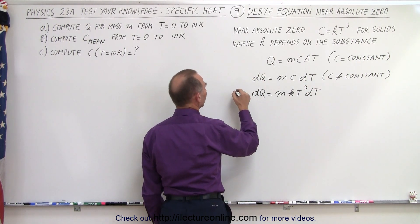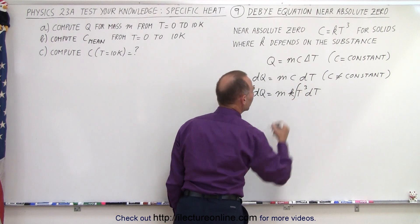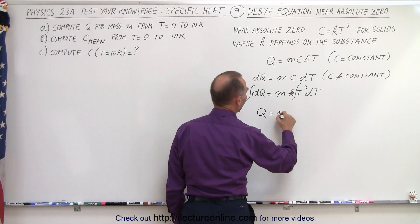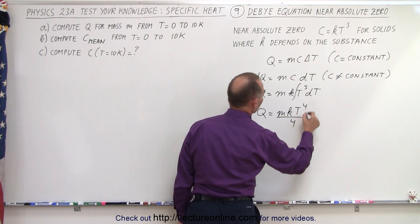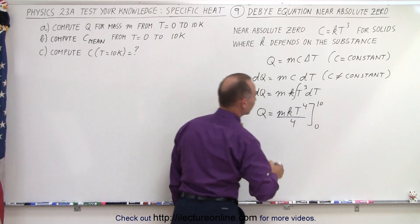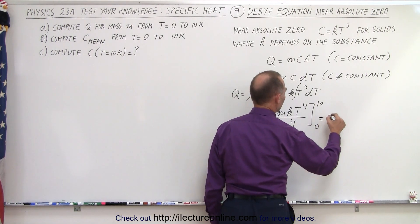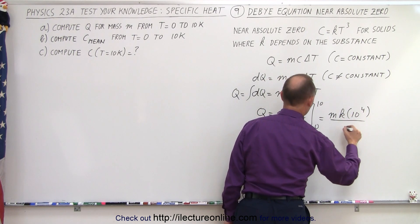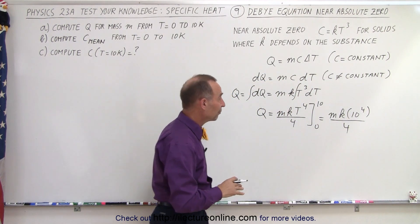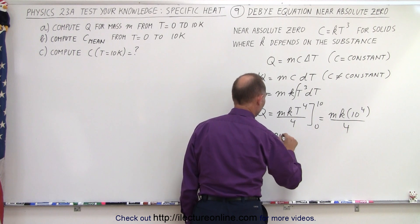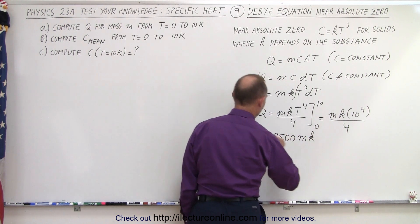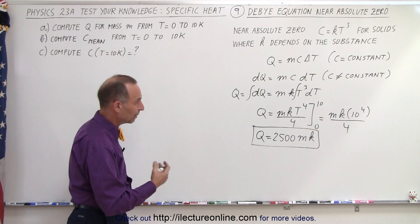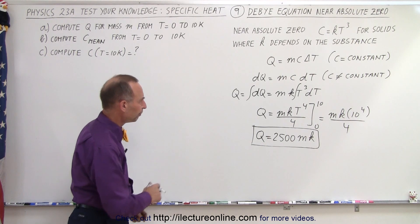To find all of Q, that's going to be equal to the integral of DQ, which is the integral of T cubed DT with M and K being constants. That gives us Q equals M·K times T to the 4th over 4, evaluated from 0 to 10. That would be M·K times 10 to the 4th over 4, which is 10,000 divided by 4, giving Q equals 2,500 times M times K. That is the heat required to raise the temperature from 0 to 10 K, for Part A.